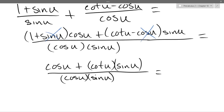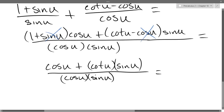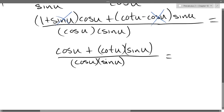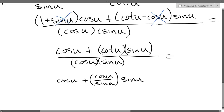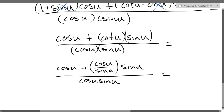Cotangent times sine — cotangent is cosine over sine. So it's cos u / sin u. If you're good at identities, you can write cosine in its place directly. So we get cos u + (cos u / sin u) · sin u.